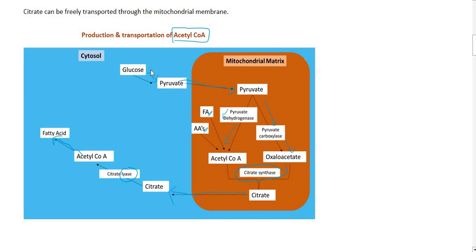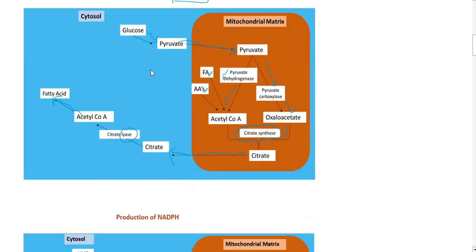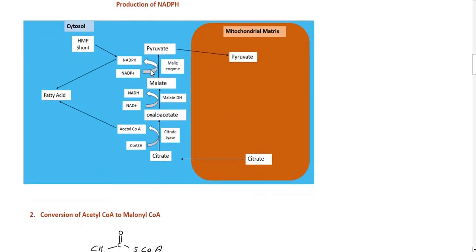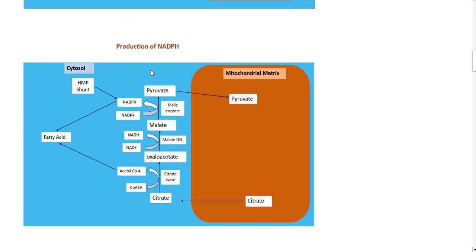Citrate is exported from the mitochondria into the cytoplasm. In the cytoplasm, citrate is cleaved back to release acetyl-CoA and oxaloacetate. The acetyl-CoA is then available for fatty acid synthesis, and NADPH is also generated through this process.